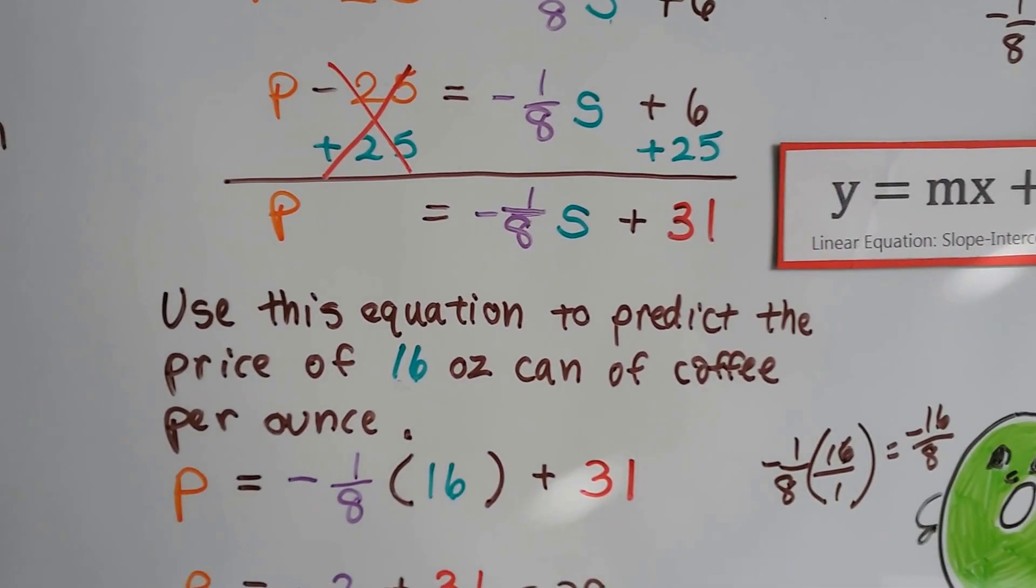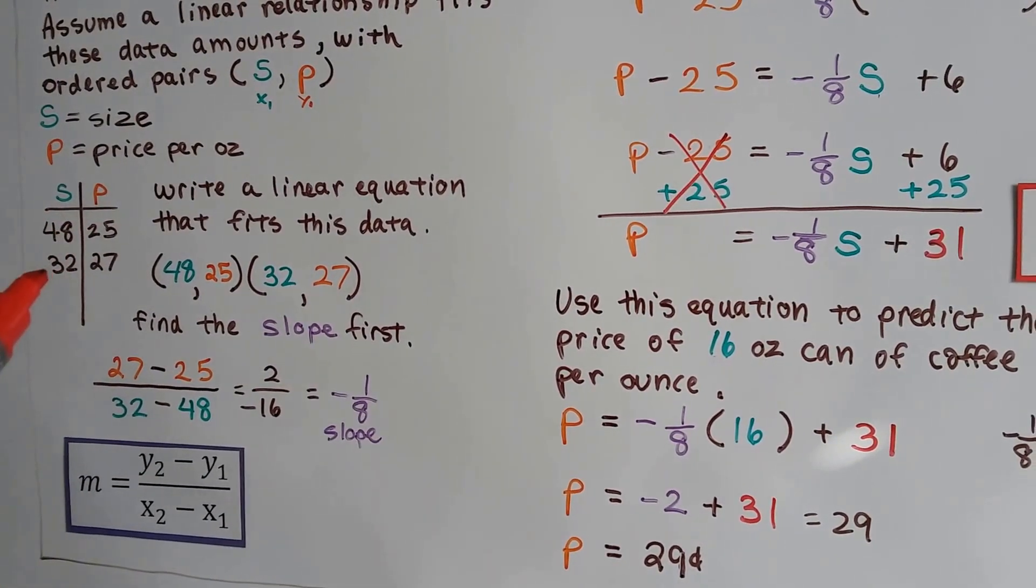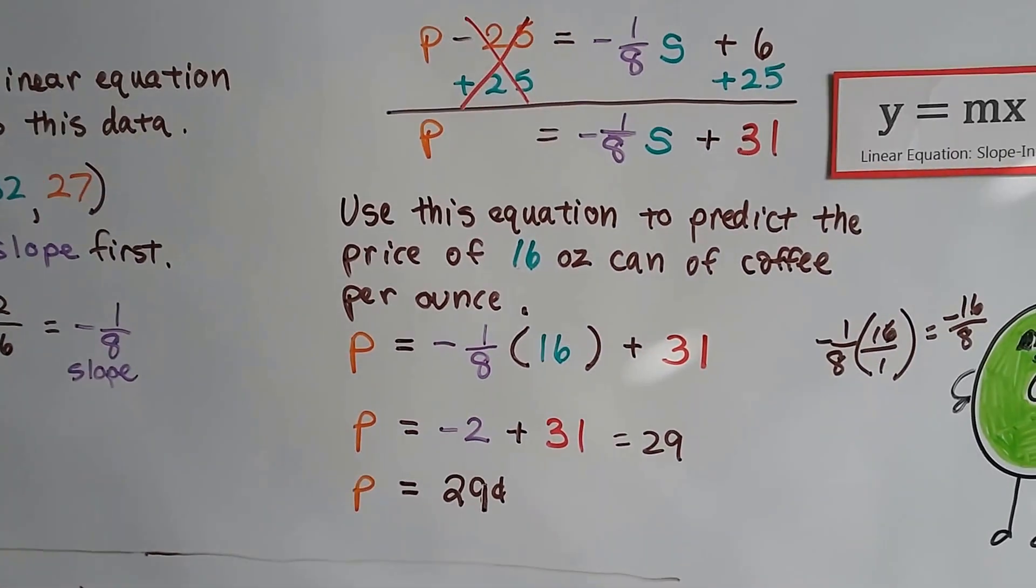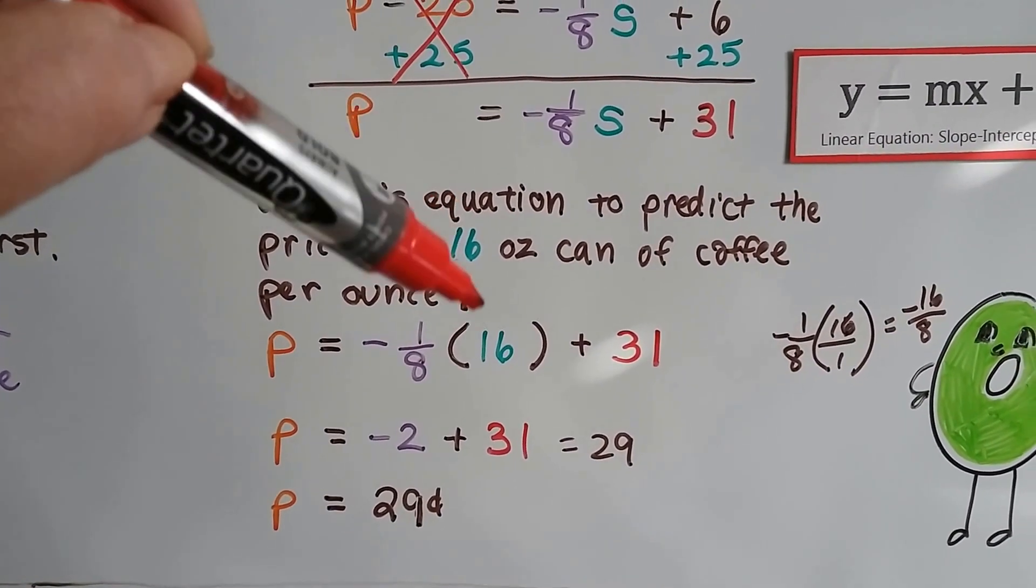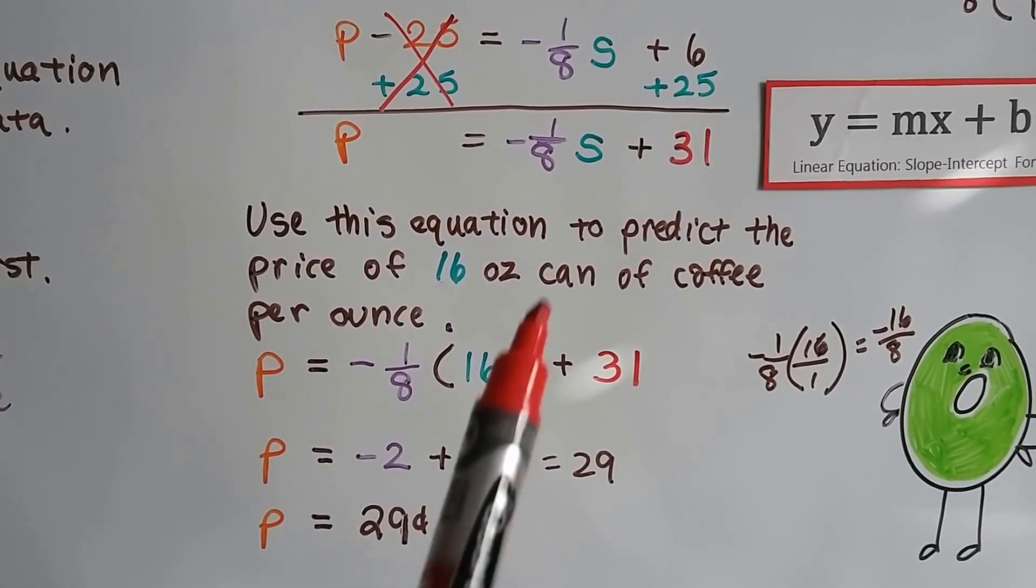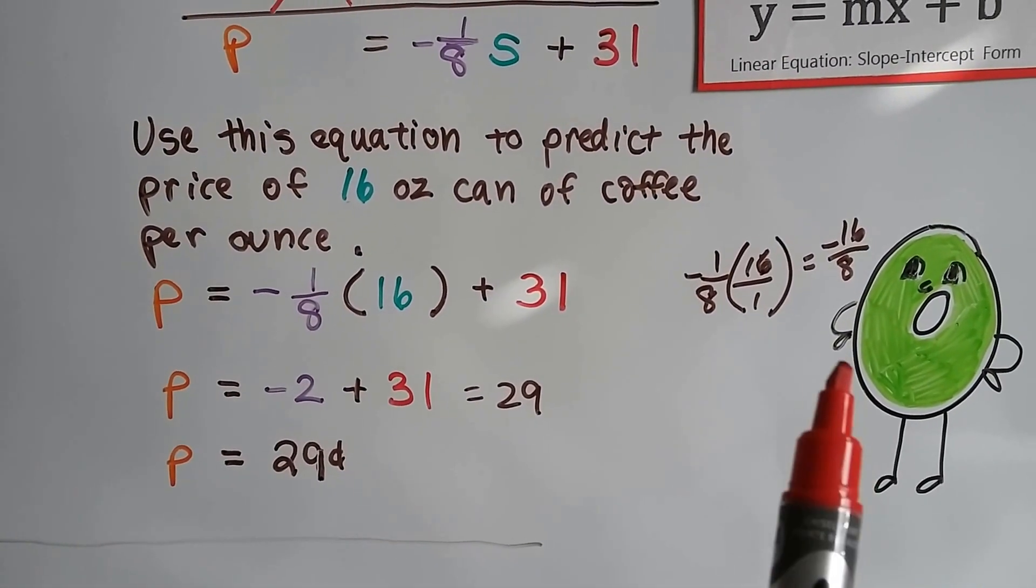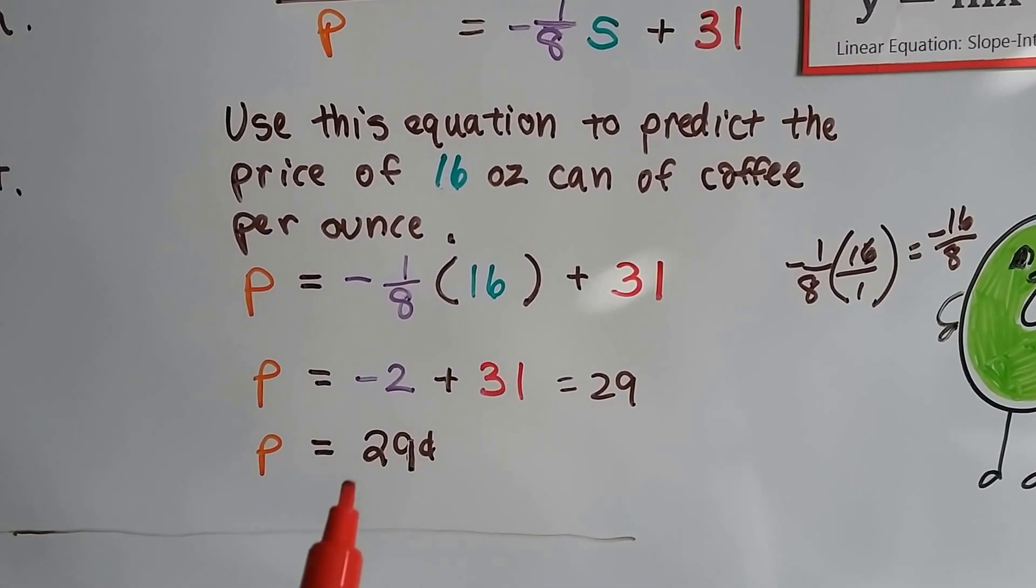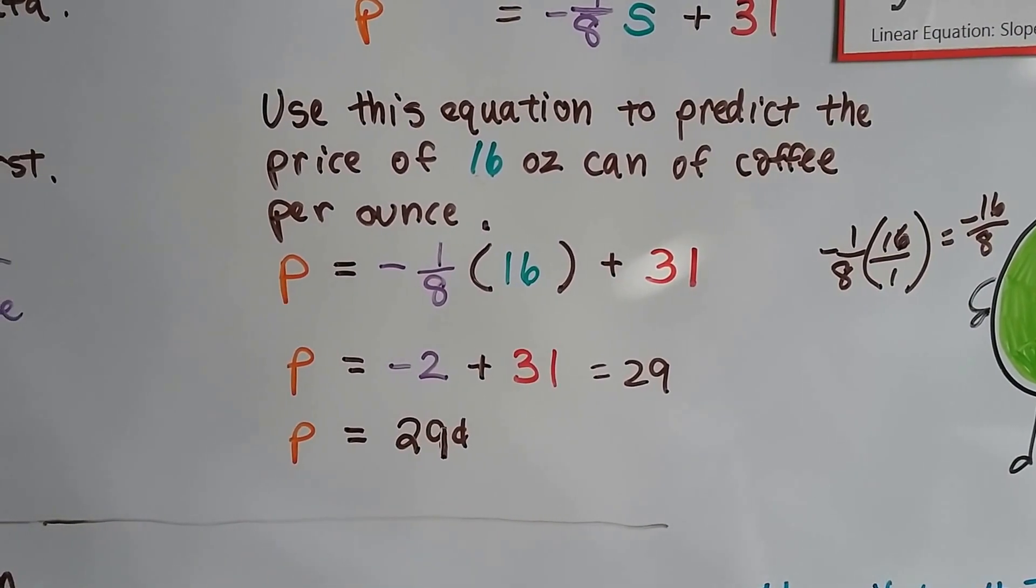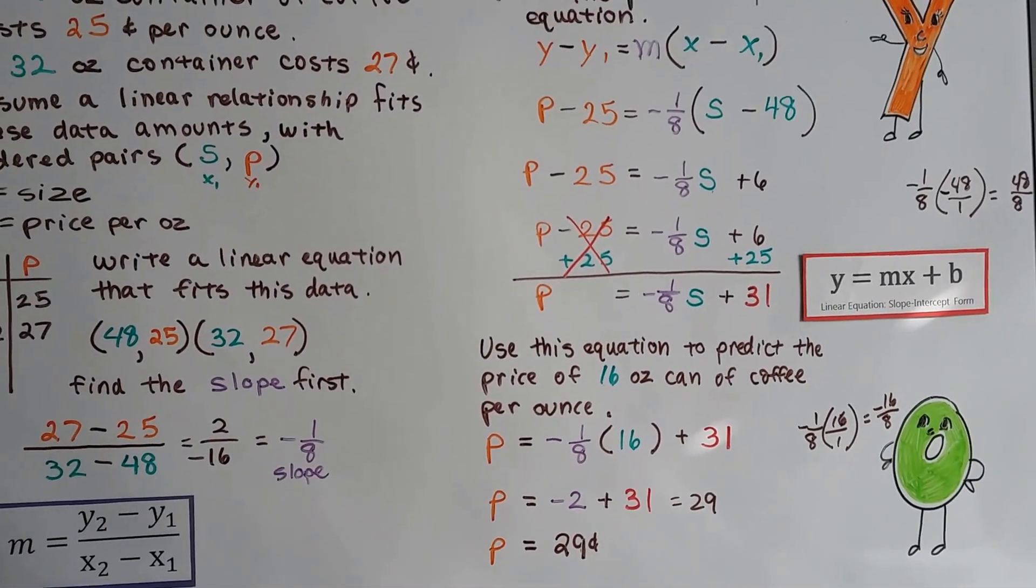We can use this equation to predict the price of a 16-ounce can of coffee per ounce. So we were at 48 and it was at 25. Then when we went down a smaller can to 32, the price went up to 27. So what would a 16-ounce can cost per ounce? So where the X is, we plug in the 16. See? Where the S was, or it's the same thing as the X. And 1/8th times a positive 16 gives us a negative 16 over 8. Well, that's a negative 2. Negative 2 plus the 31 is 29. So we know if we bought a 16-ounce can, we'd be paying 29 cents per ounce. So the smaller the can, the more we have to pay per ounce. See? You buy a bigger quantity and you save money. Now it's not always true at the store. Sometimes you get a better deal for buying a smaller one. You have to do the math.